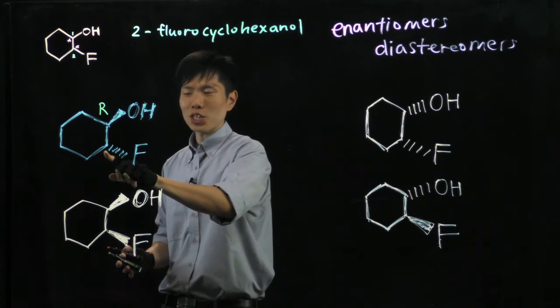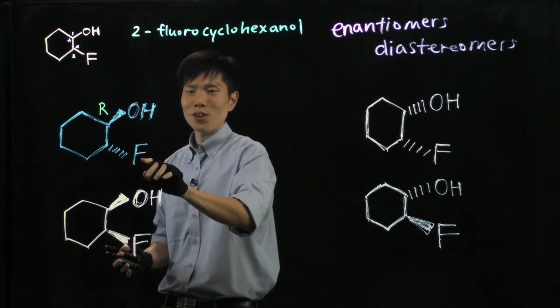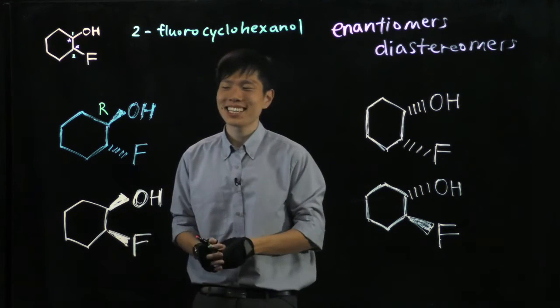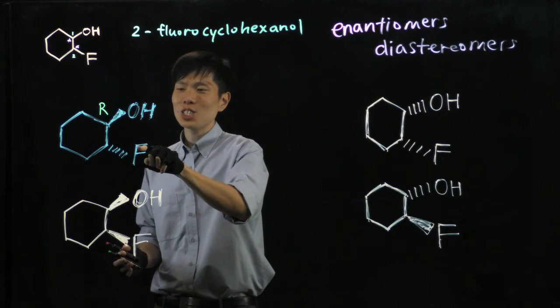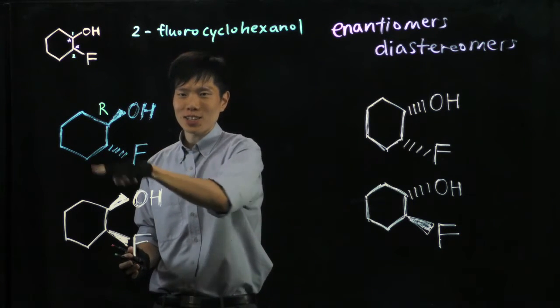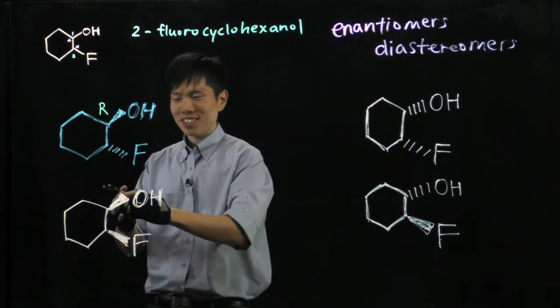For this, hydrogen coming towards you, fluorine pointing to the back. So 1, 2, 3, and you flip it around, this is an R.